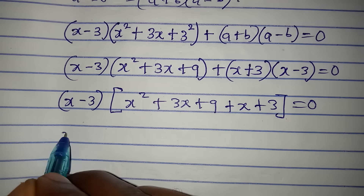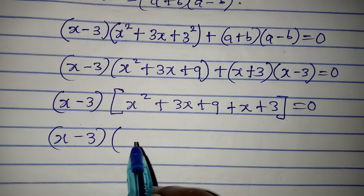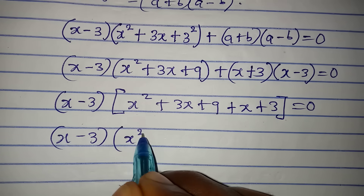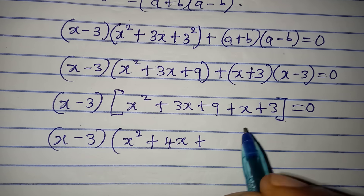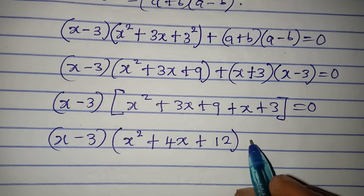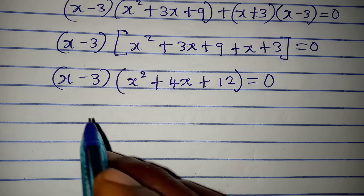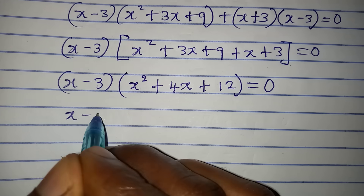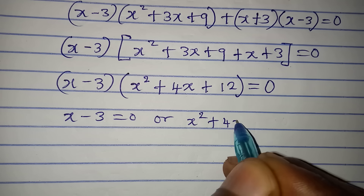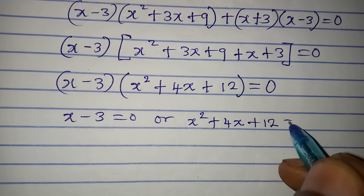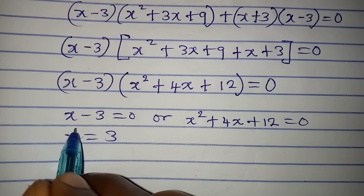Now I have x minus 3 in this bracket, then in the other bracket we combine: x squared plus 3x plus x gives us 4x, then 9 plus 3 gives us 12, equals 0. We apply the zero product rule, which says it is either x minus 3 equals 0, or x squared plus 4x plus 12 equals 0. From the first, our x is equal to 3, and that is understandable.